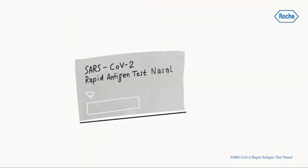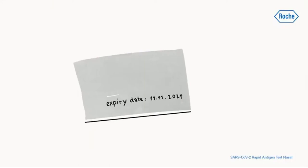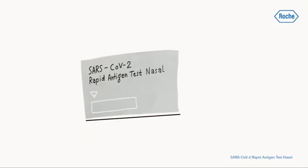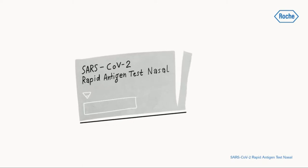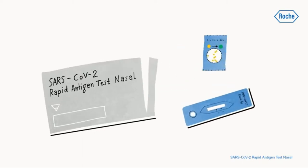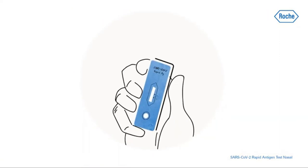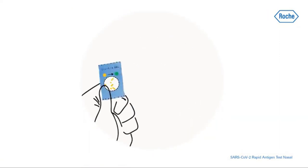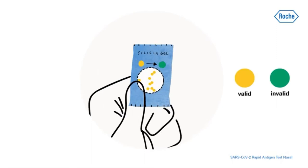For each test, check the expiry date on the back of the foil pouch. Do not use the test if the expiry date has passed. Open the foil pouch and remove the test device and the desiccant package. Ensure that the test device is undamaged and that the desiccant status indicator is yellow.